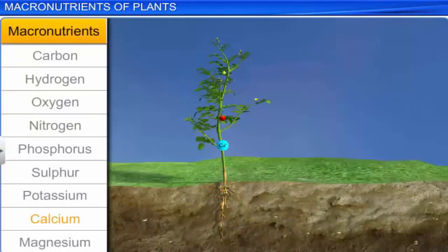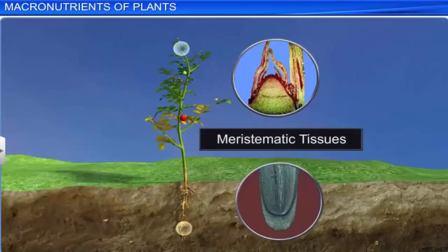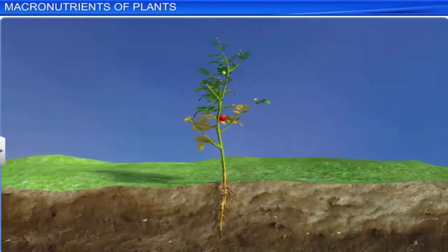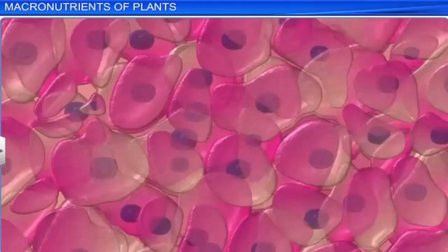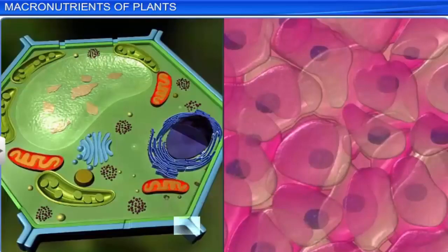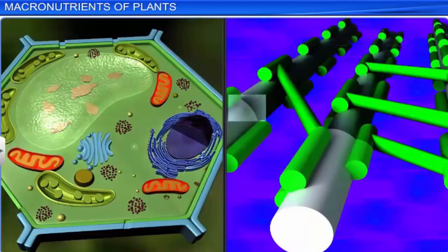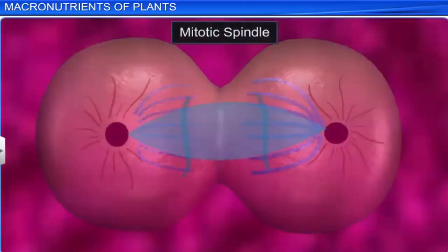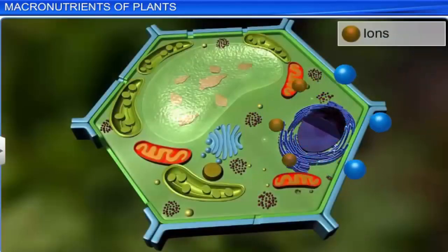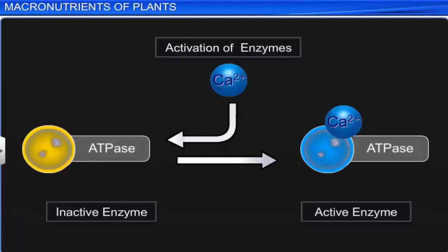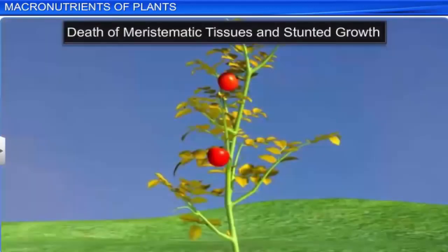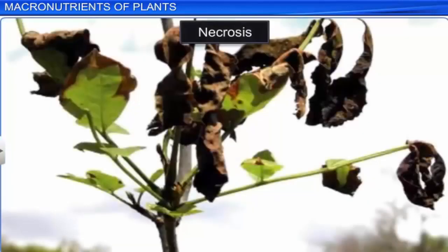Calcium is absorbed by plants in the form of calcium ions from calcium carbonate. It is needed in meristematic tissues and differentiating tissues, and accumulates in older leaves. Calcium plays an important role in cell division. It synthesizes pectin in the middle lamella of the cell wall and helps in the formation of the mitotic spindle. It is involved in selective permeability of cell membranes and activates certain enzymes like ATPase. The deficiency of calcium leads to the death of meristematic tissues, stunted growth, and necrosis.